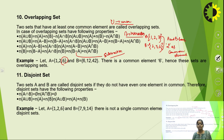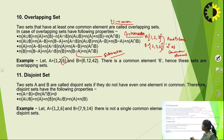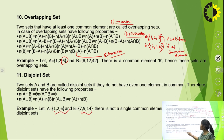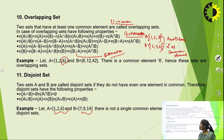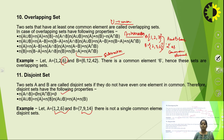Disjoint sets are sets with no common element. For example, {1, 2, 6} and {7, 9, 14} have no common element, so these are disjoint sets. Their intersection is null.